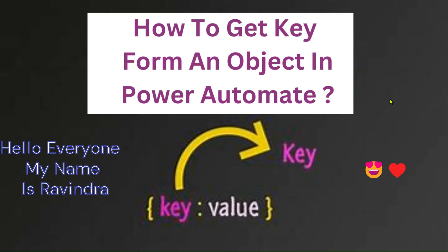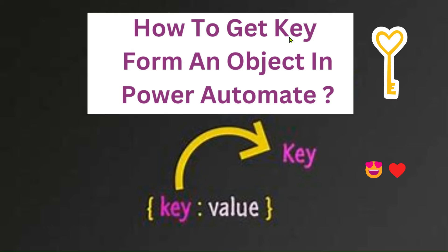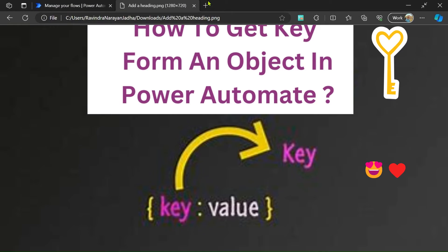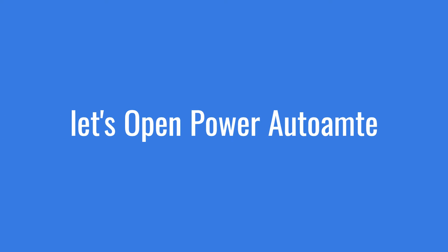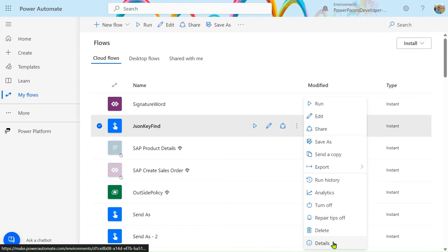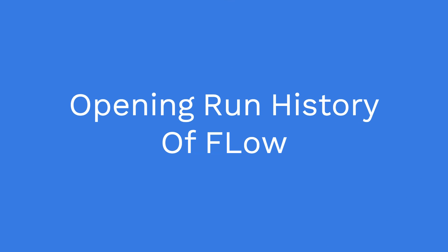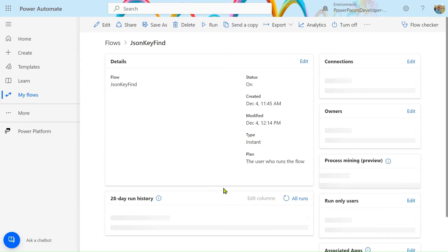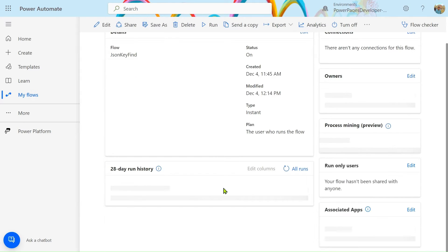Hello everyone, my name is Ravindra. In this video we will see how to get a key from an object in Power Automate. I'll explain the scenario first by opening the run history of the flow so you can understand it, and we will also see how to create this flow in a stepwise manner.